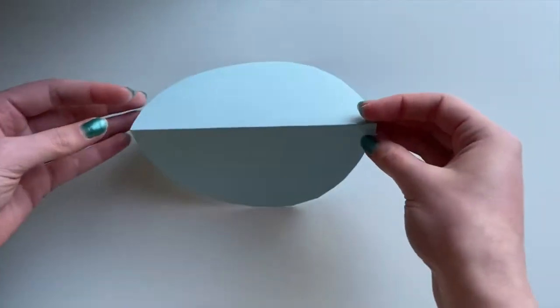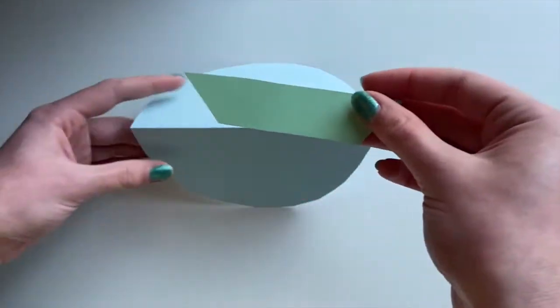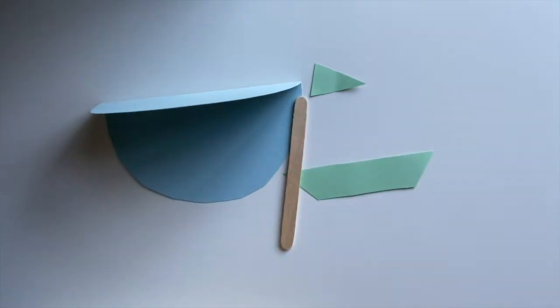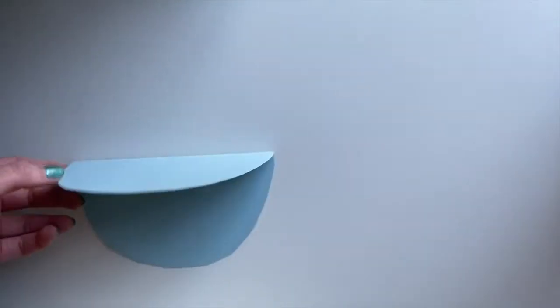Make sure you have a blue folded circle, a trapezoid shape, a triangle shape, and your popsicle stick. We're going to need all these pieces in the next steps.